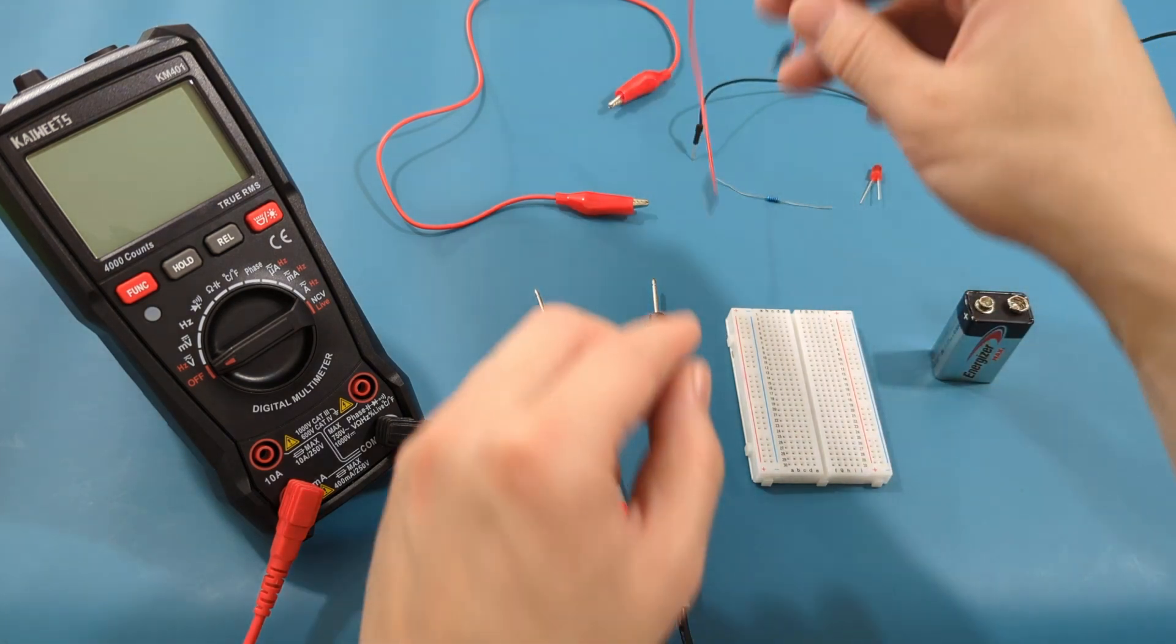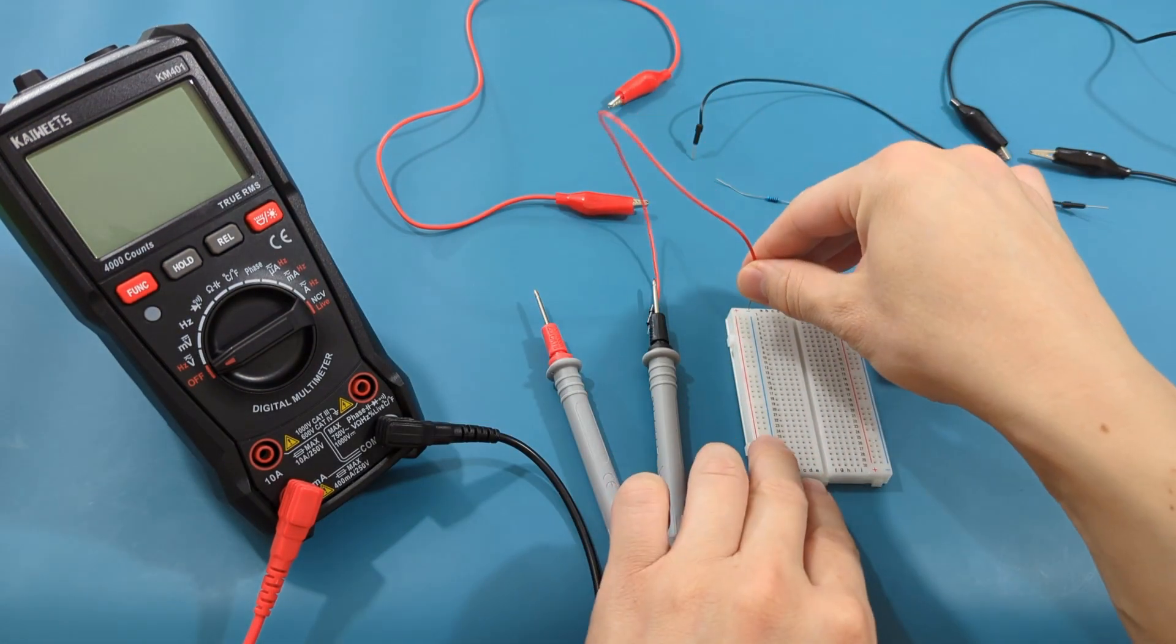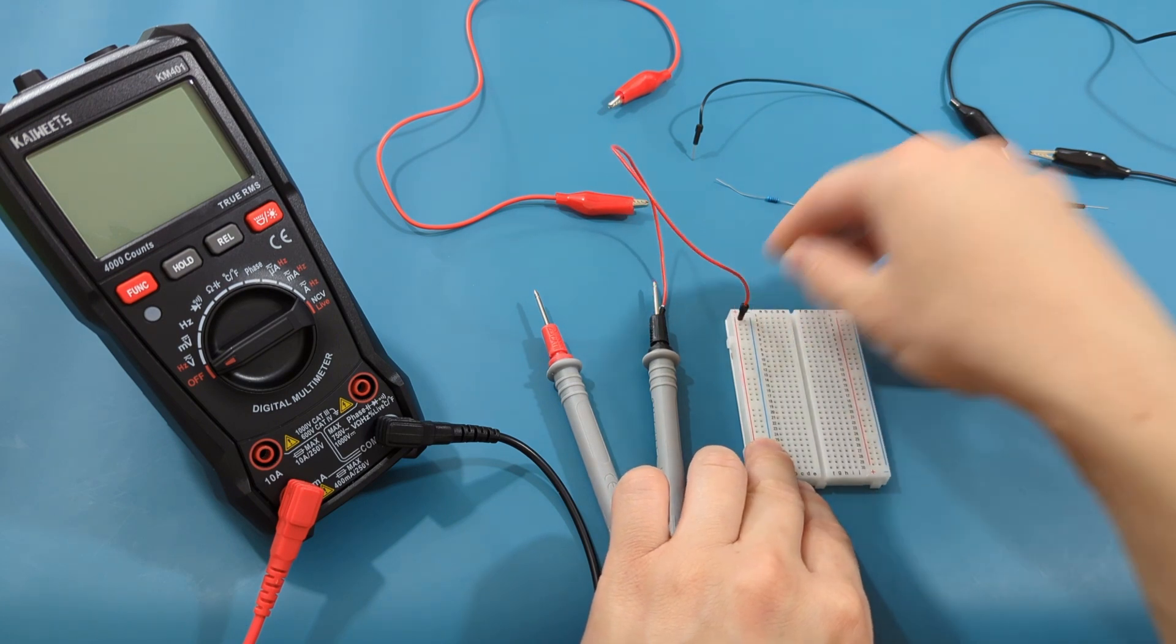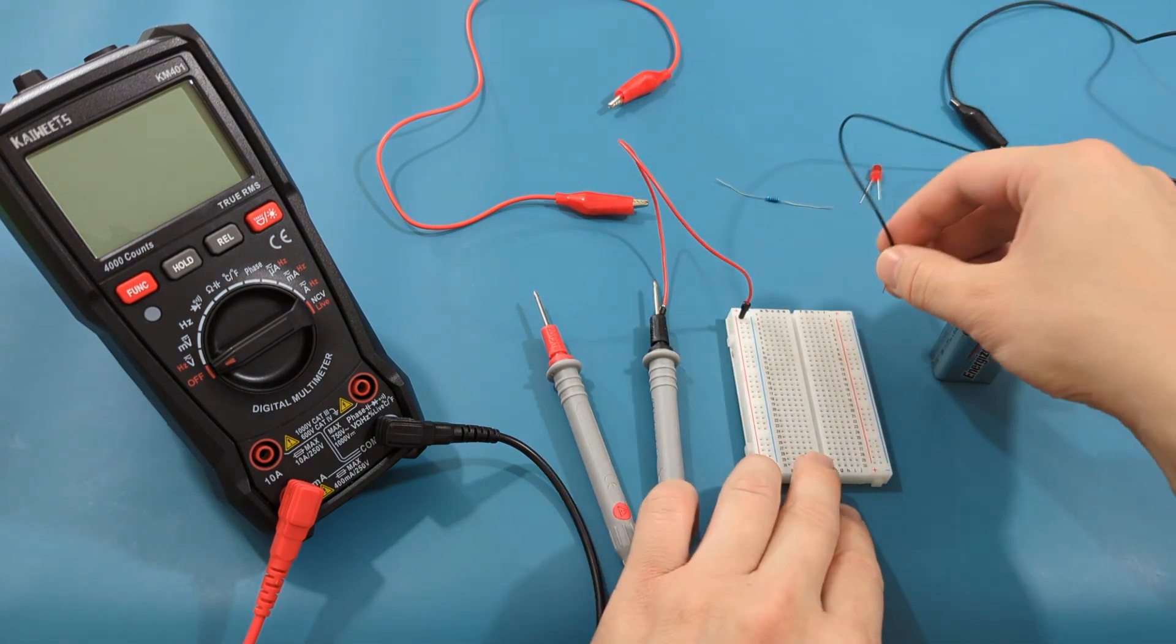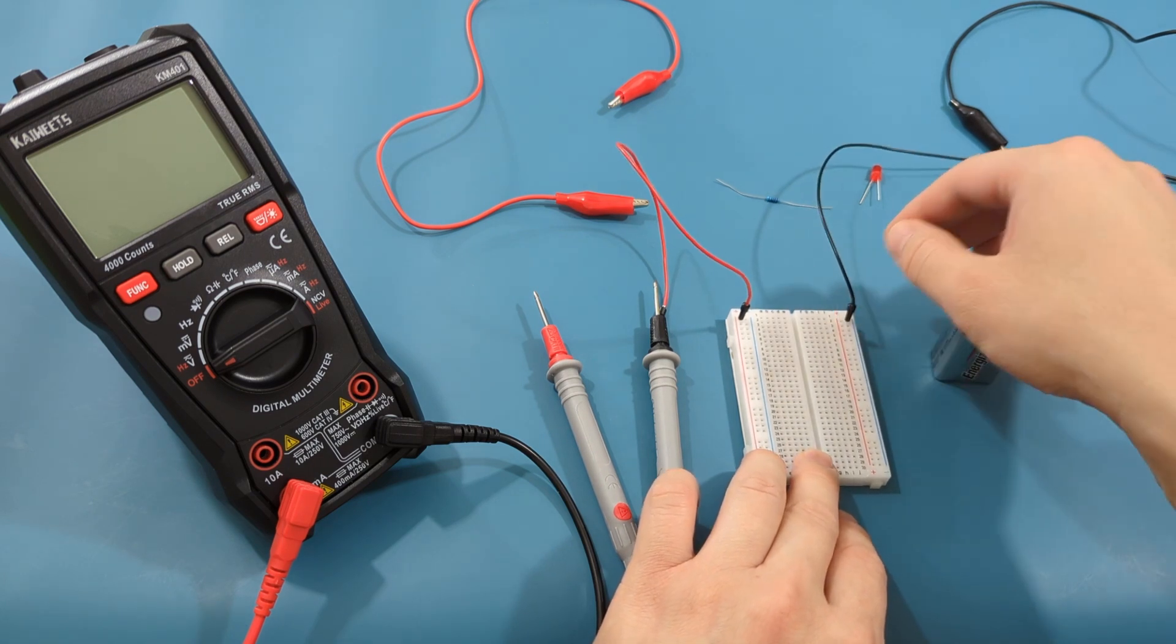Connect the red jumper wire to the breadboard marked with a red plus sign. Connect the black jumper wire to the breadboard marked with a black minus sign.